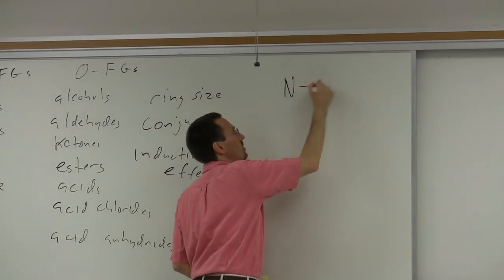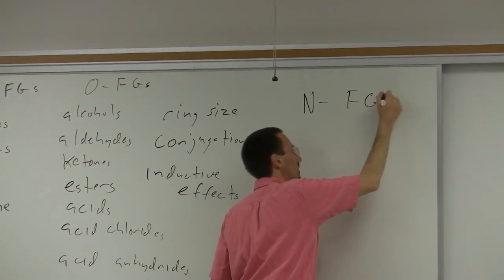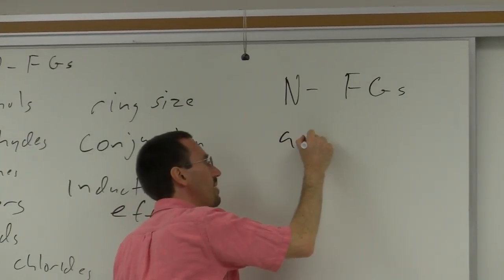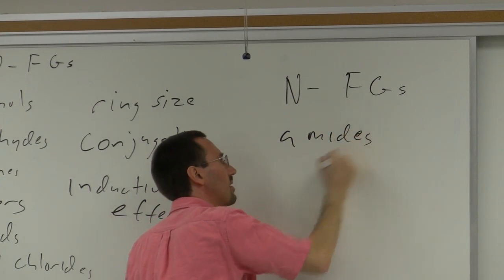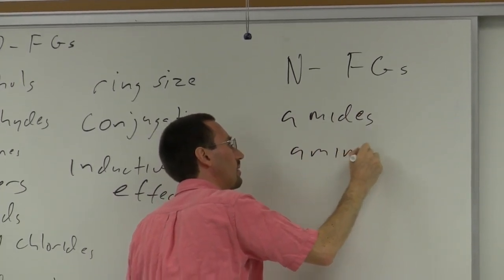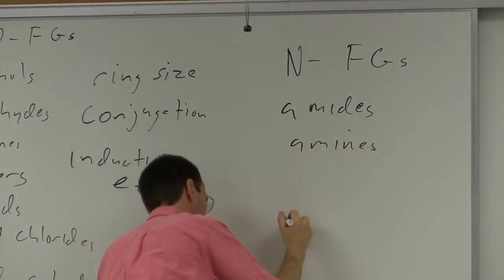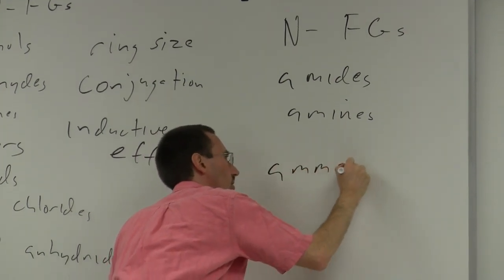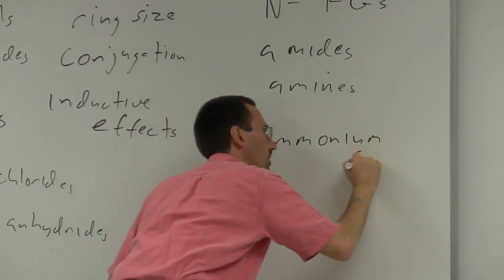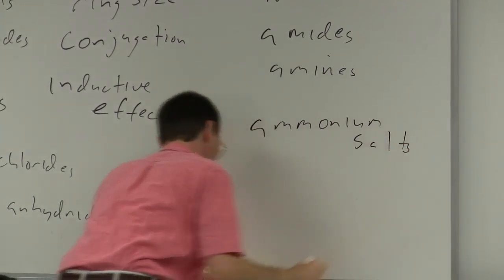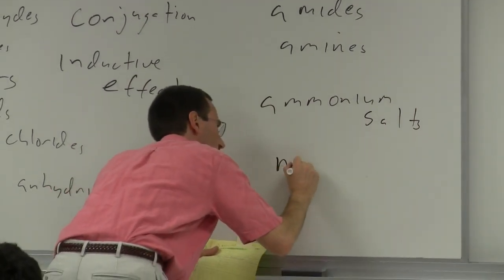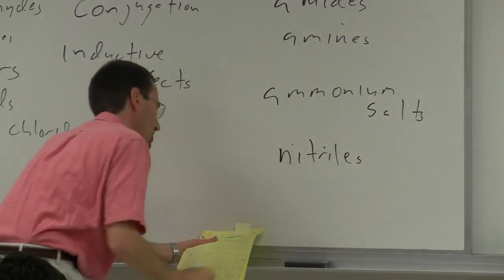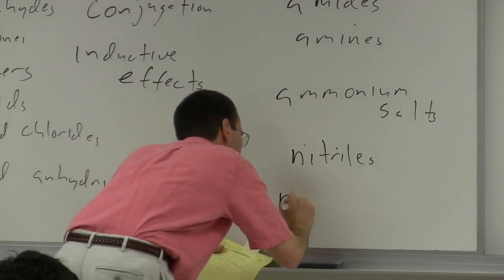We'll talk about nitrogen-containing functional groups: amides, amines, ammonium salts, and maybe nitriles. Nitriles are another one that IR really shines at for identifying.